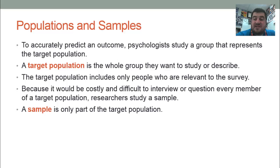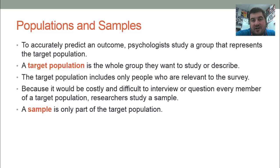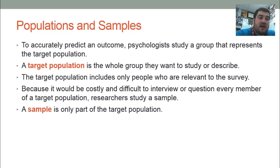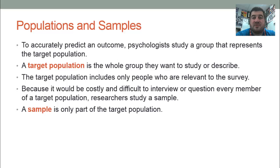Populations and samples — let's do some definitions. Think of the general population as everybody that lives in the United States. Our target population is the entire group they want to study or describe. So if we're doing an experiment in high schools, our target population would be high school students — hundreds of thousands of people. It's only the people relevant to the survey, so middle school students would not be a member of the high school student population.